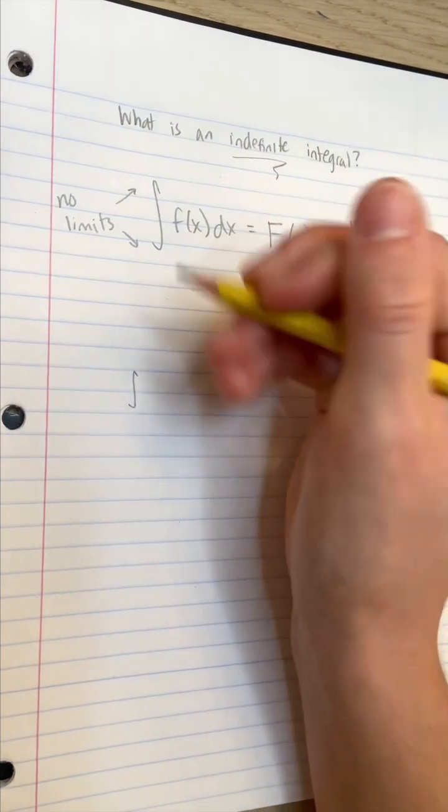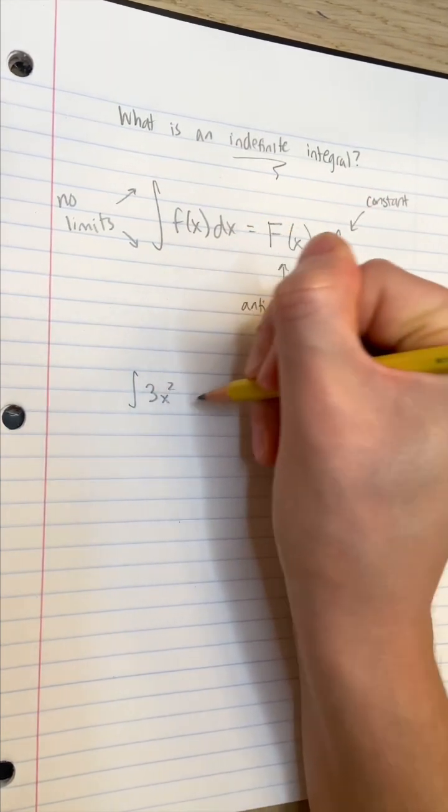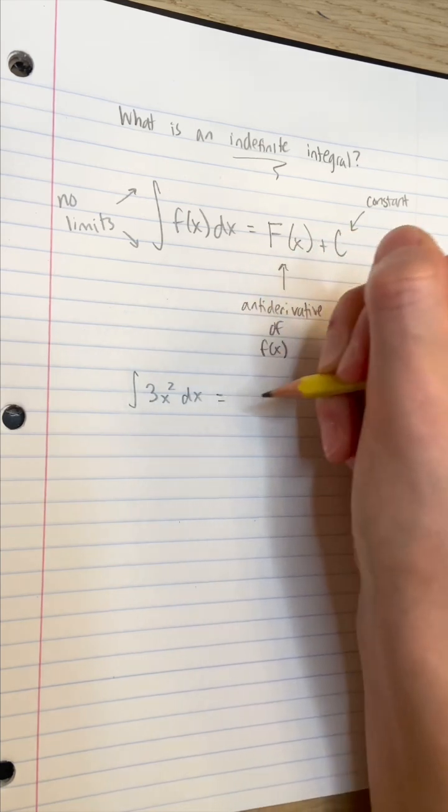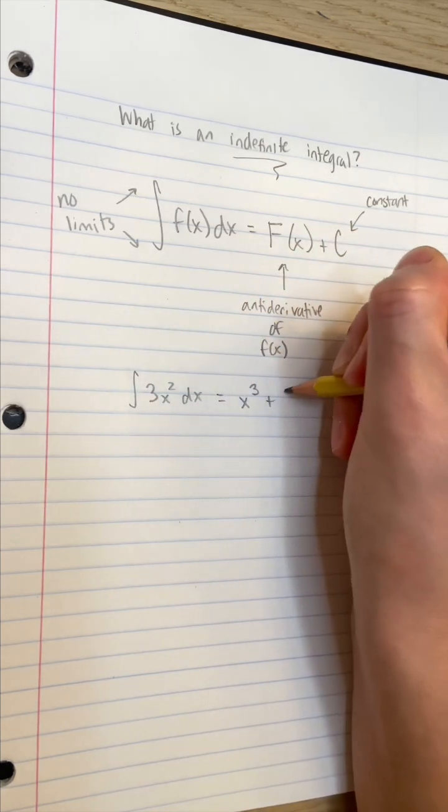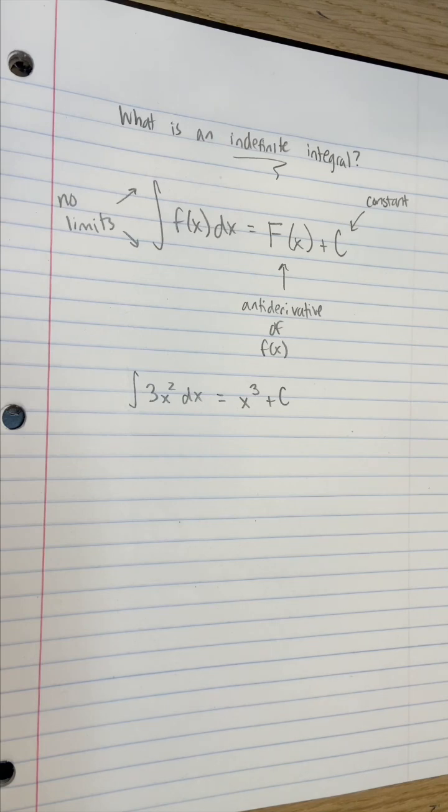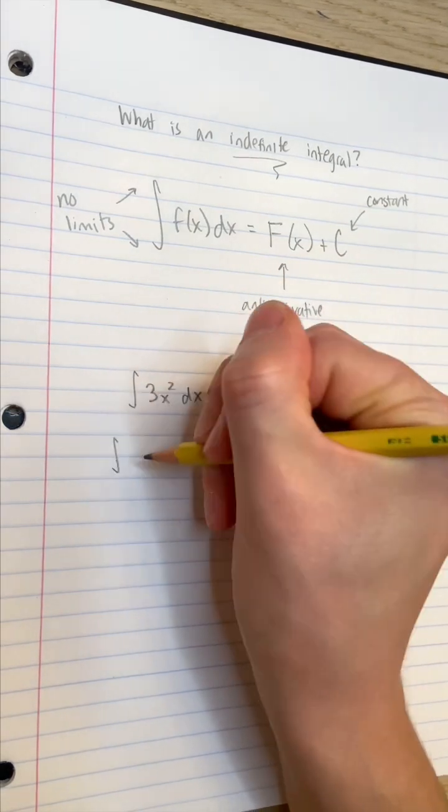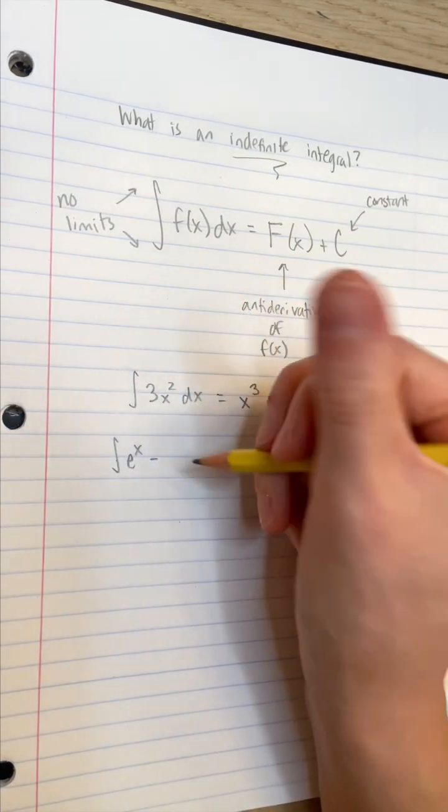So let's practice. The indefinite integral 3x squared dx is equal to x to the power of 3 plus c, because the derivative of x to the power of 3 is 3x squared, and we throw in the plus c to account for any possible constants whose derivative is just 0.